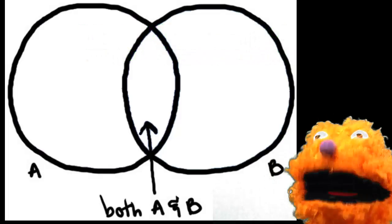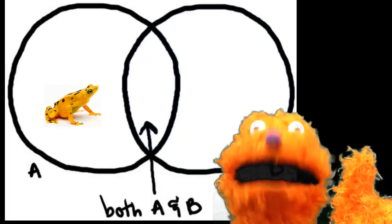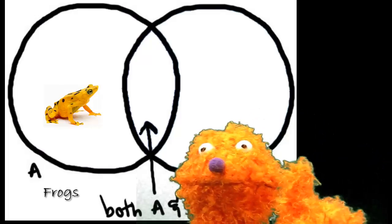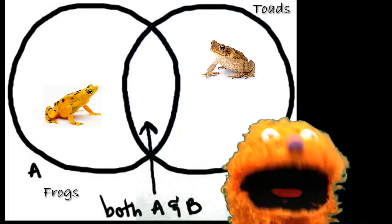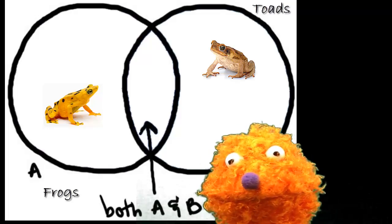What we're gonna do is we're gonna have frogs in one part of the Venn diagram and toads in the other part of the Venn diagram. You're gonna take the qualities of frogs and toads.